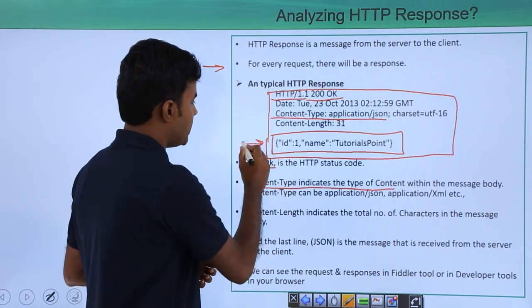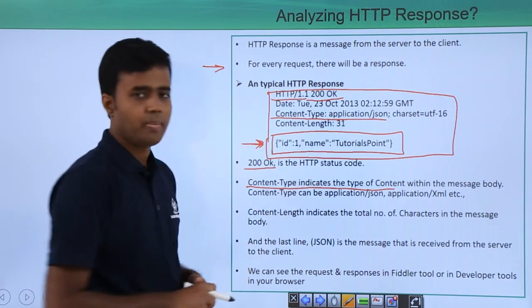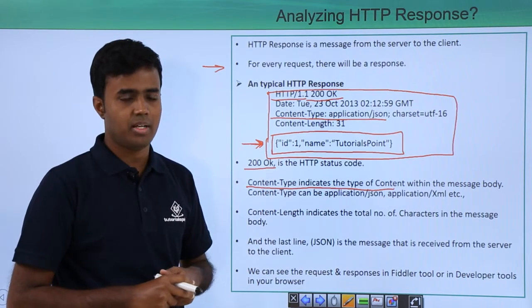This content type can be anything like application slash JSON or application slash XML and so on.